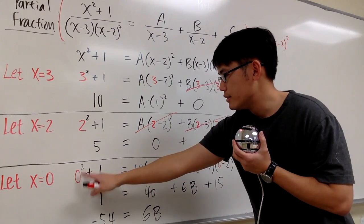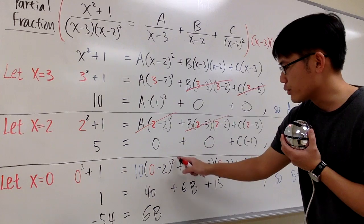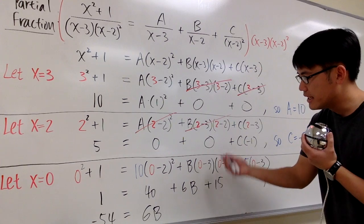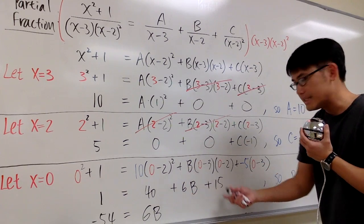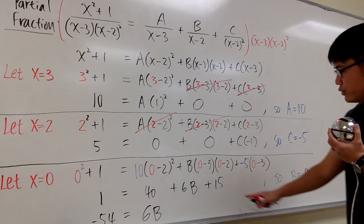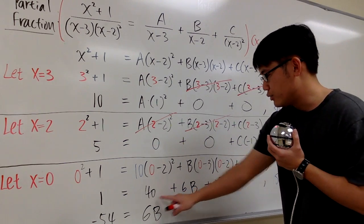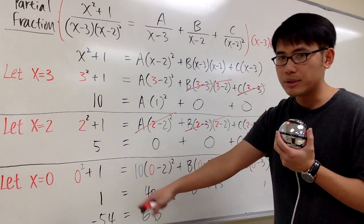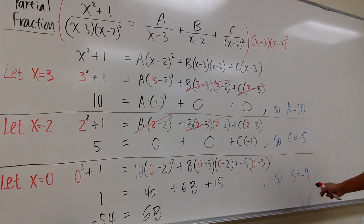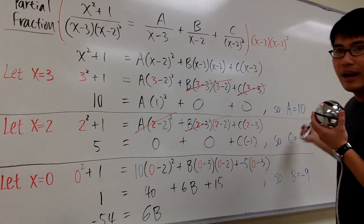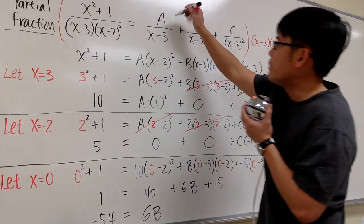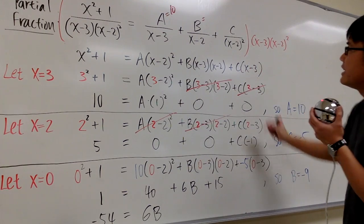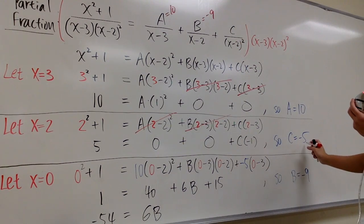This is just a linear equation. So 0 squared plus 1 is 1. Then 10 times negative 2 squared is 40. The b term gives negative 3 times negative 2 times b, which is 6b. The last part is negative 5 times negative 3, which is positive 15. Adding 40 and 15 gives 55, so 1 equals 55 plus 6b. Subtracting 55 from both sides gives negative 54 equals 6b. Dividing both sides by 6, we get b equals negative 9.